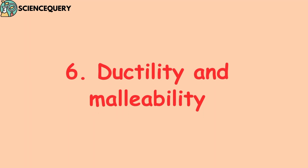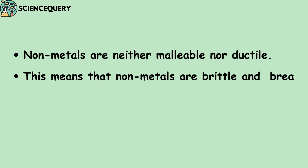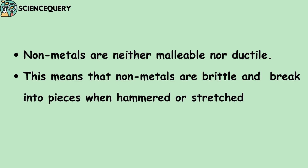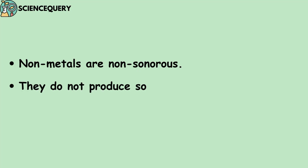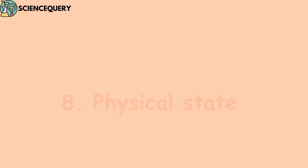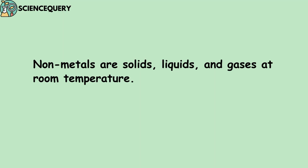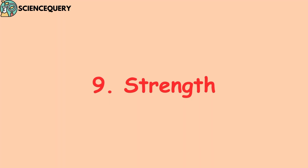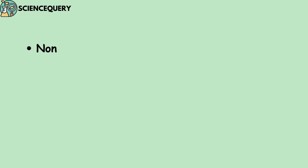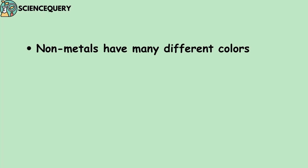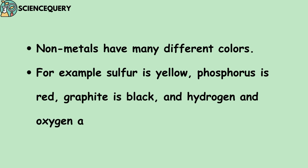The ductility and malleability of non-metals is very low — non-metals are neither malleable nor ductile. This means non-metals are brittle and break into pieces when hammered or stretched. Non-metals are also non-sonorous — they do not produce sound when hit by other objects. Non-metals can be solids, liquids, and gases at room temperature. Non-metals are not strong. Non-metals also have many different colors — for example, sulfur is yellow, phosphorus is red, graphite is black, and hydrogen and oxygen are colorless.